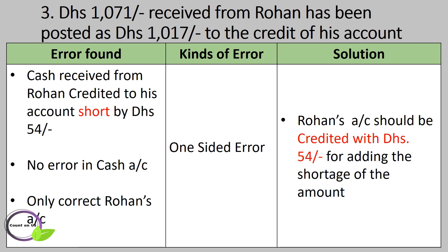Third error: 1071 dirhams received from Rohan has been posted as 1017 dirhams to the credit of his account. In this transaction, Rohan has been credited short by 54 dirhams because instead of 1071 dirhams, 1017 dirhams was entered — the difference is 54 dirhams short. So Rohan's account should be credited with 54 dirhams for adding the shortage amount.